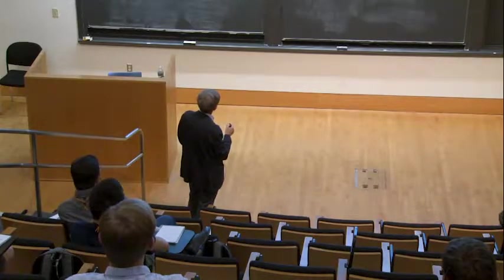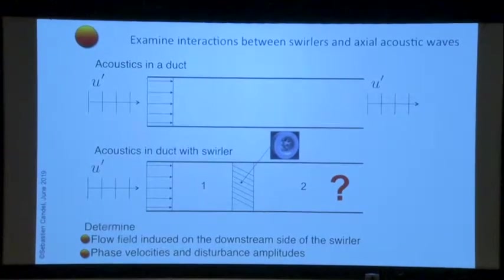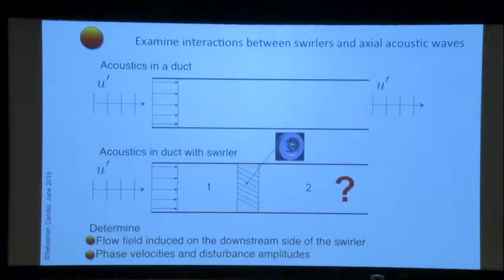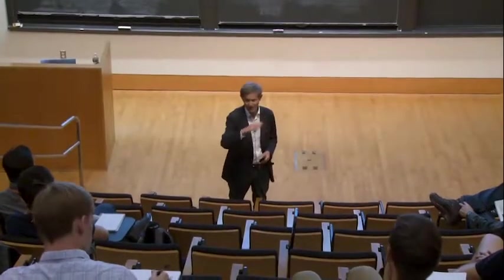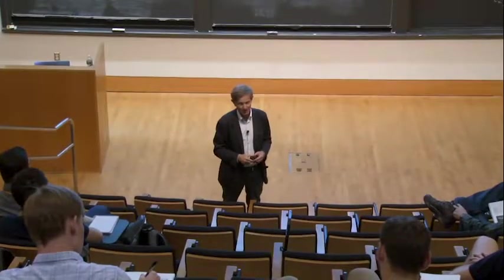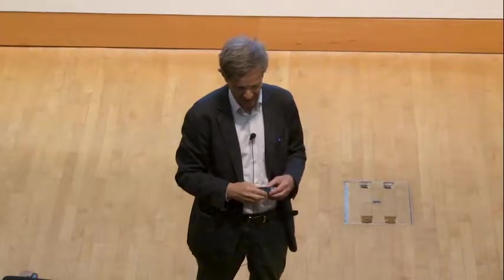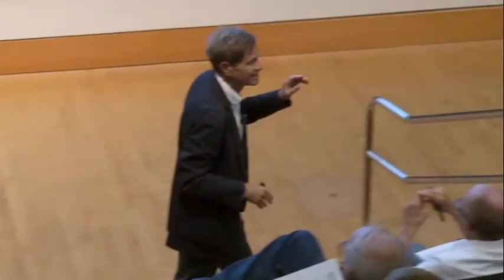Suppose you have longitudinal acoustic waves in a duct, and then you put a swirler — a swirler is like a set of vanes with a certain angle, like what you find in turbomachinery. It's a stator with guide vanes. What happens when the acoustic wave reaches this region? On the downstream side, of course you will have the acoustic wave, there will be some reflection to the back, but in addition, and this is a big thing, there will be a vorticity mode.